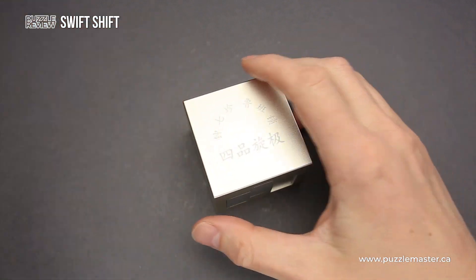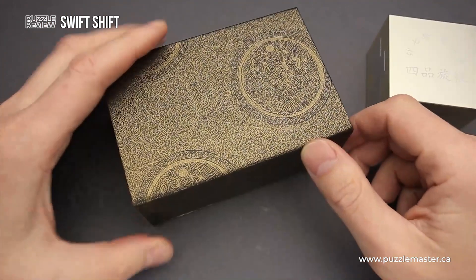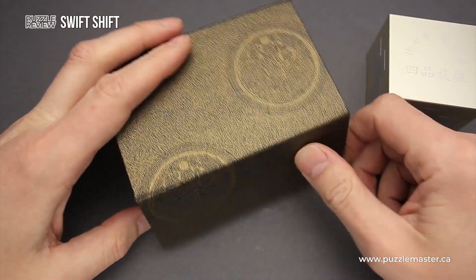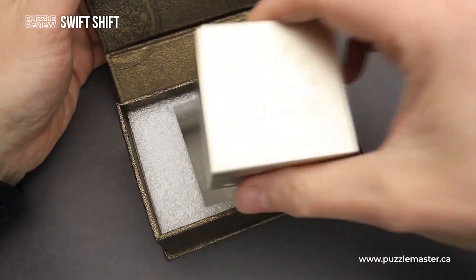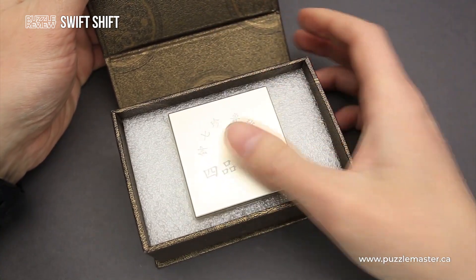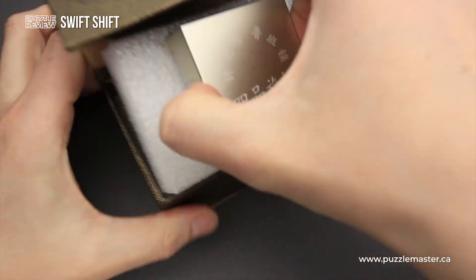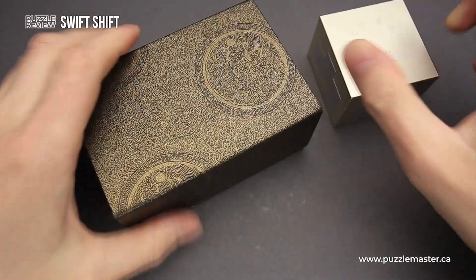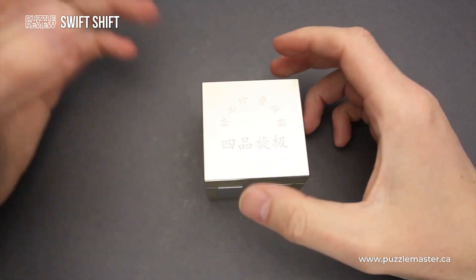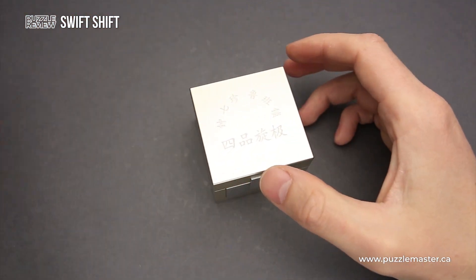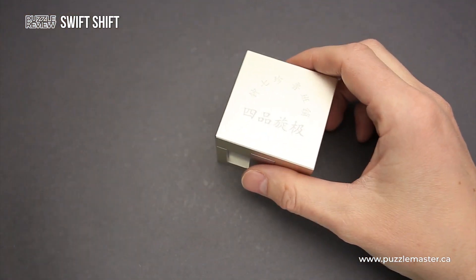The Swift Shift puzzle comes in a well-made box with magnetic lock and there is enough space to fit the puzzle inside. So it not only looks good as a puzzle, but it also comes in a beautiful box that you can put on your desk. It will be a beautiful showpiece.